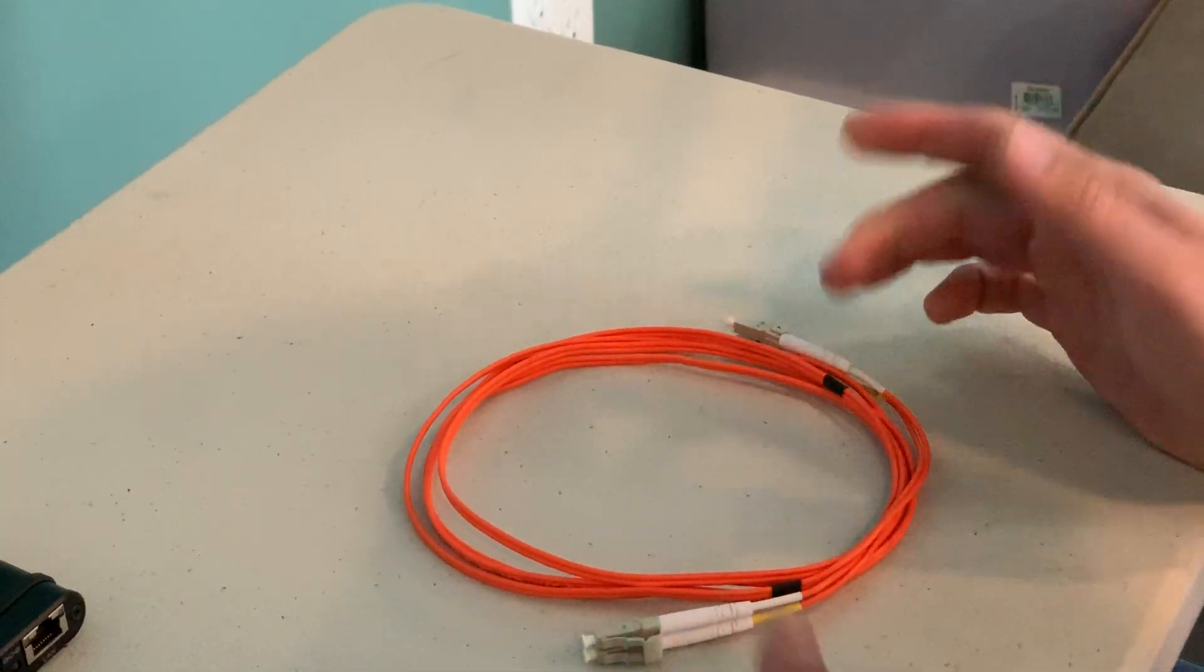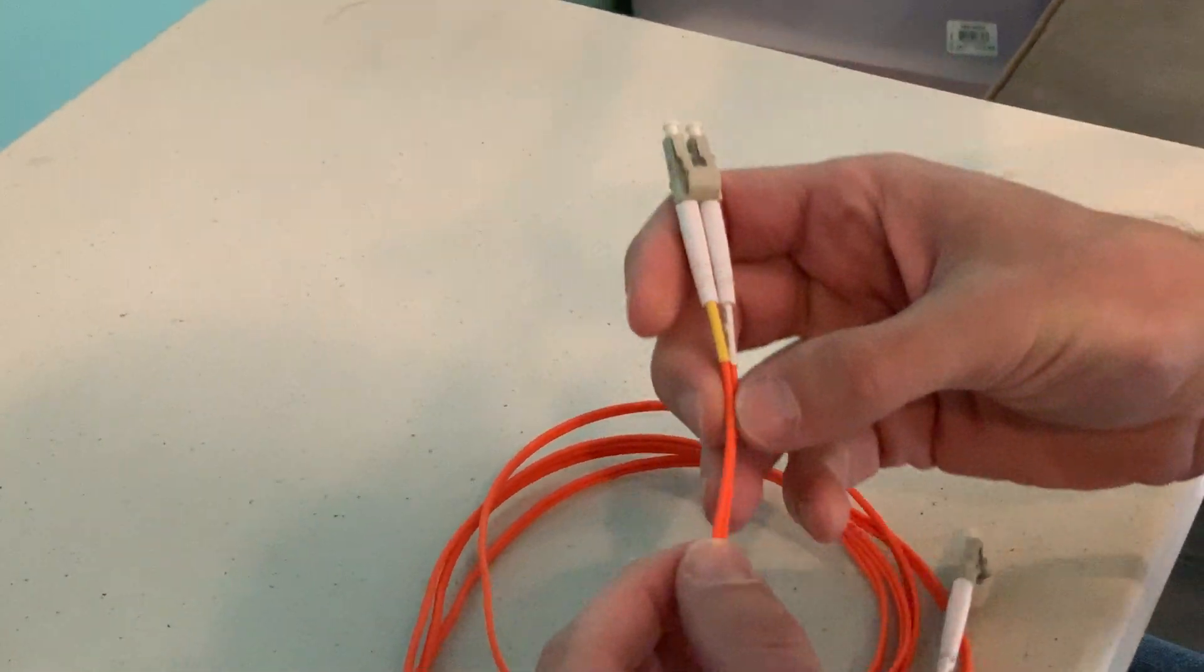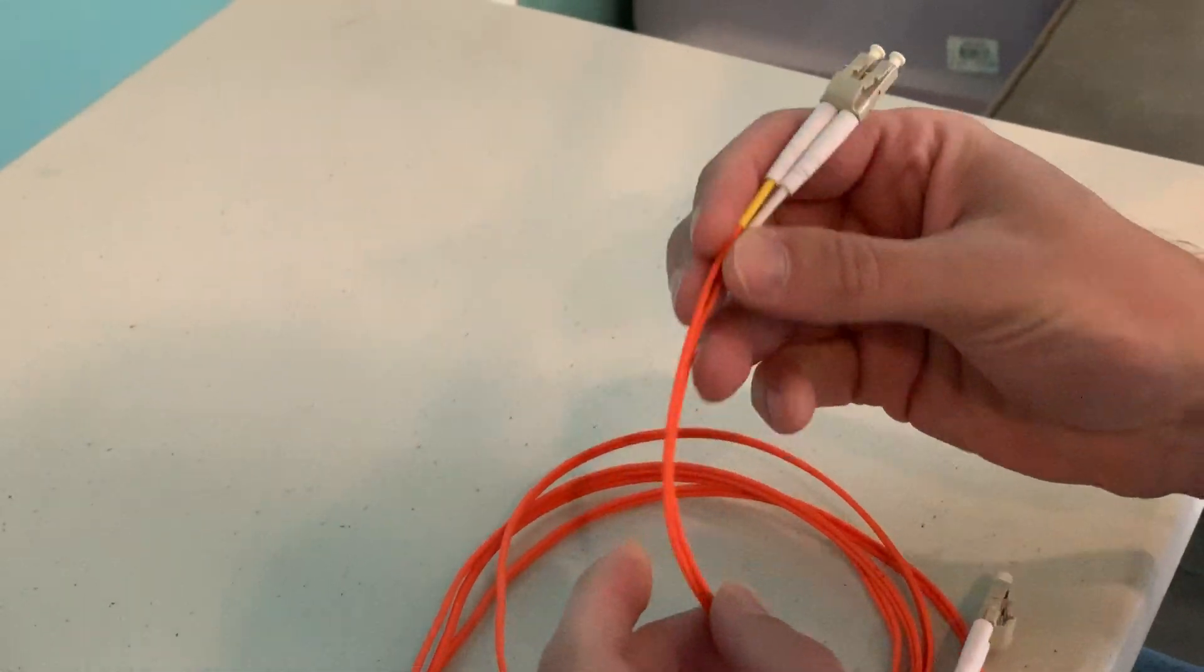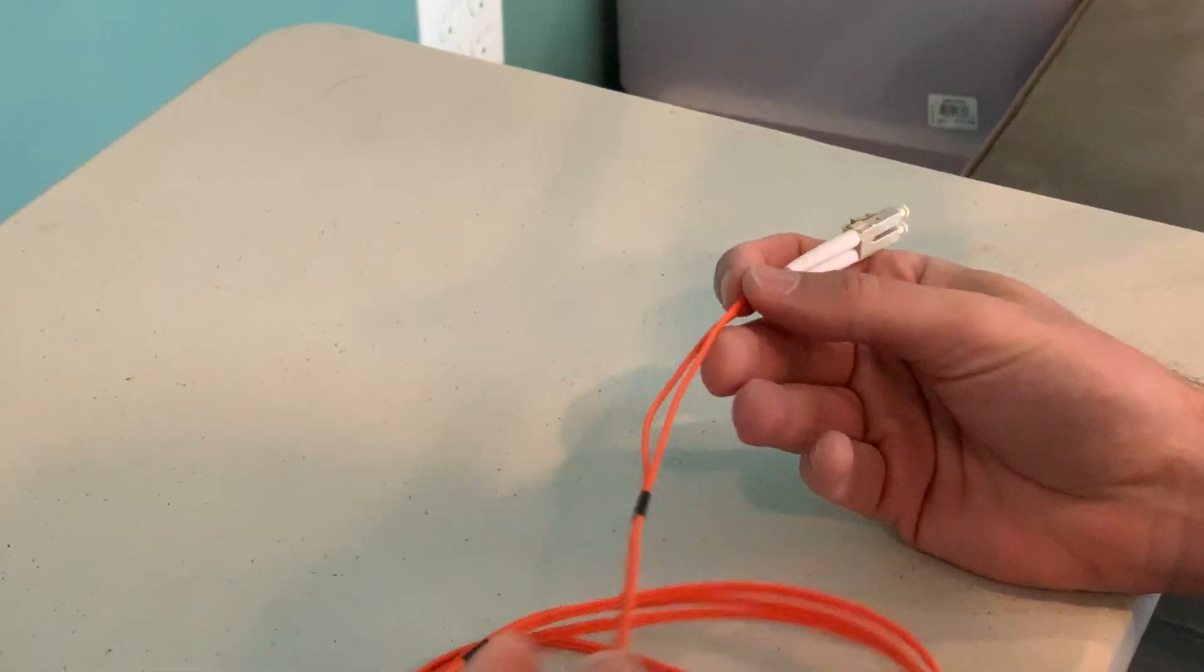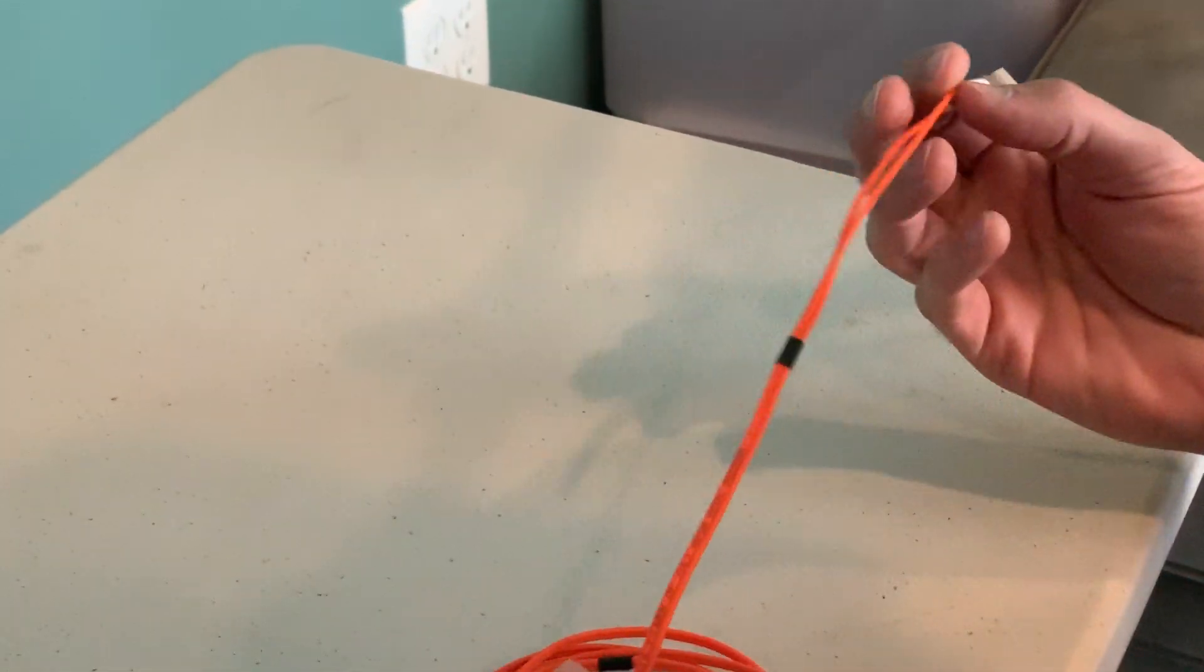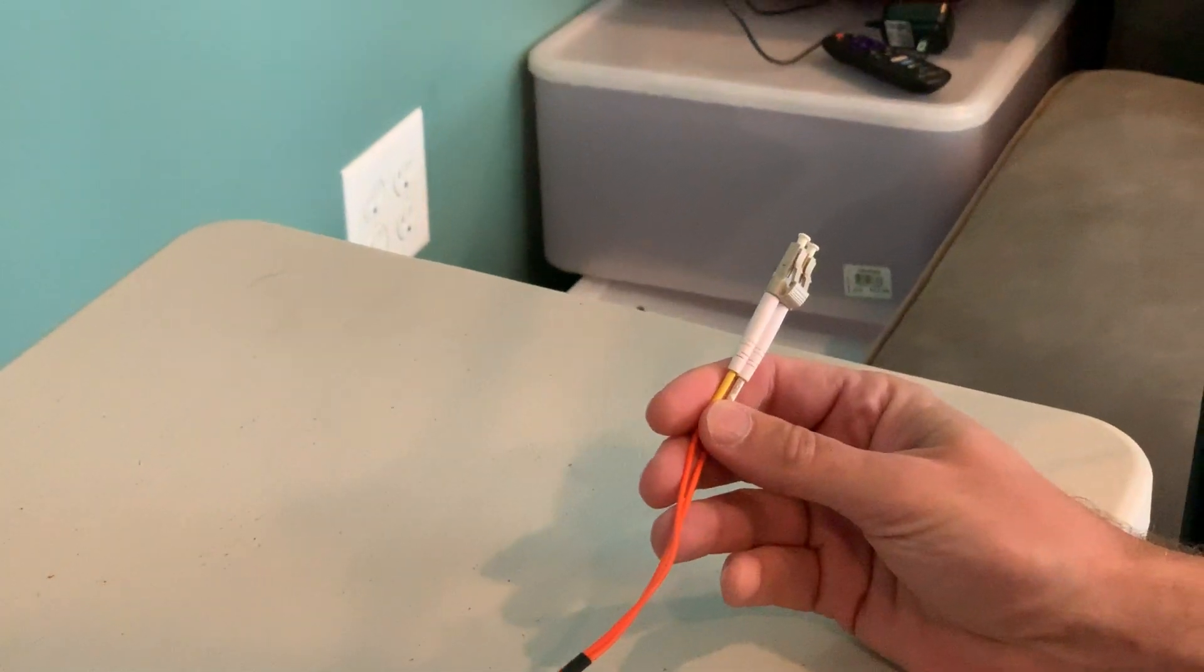We've got this optical cable. This is actually glass underneath this little sheath, and it's got light traveling through it. You could wrap this around a giant transformer—there's just no way to induce noise into this thing because it's not metal.